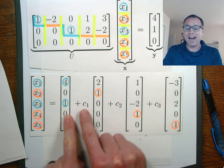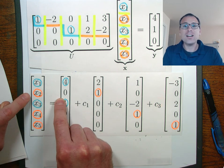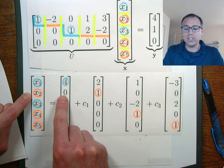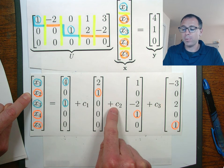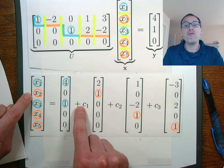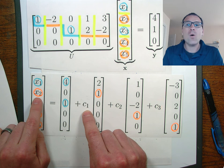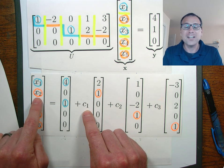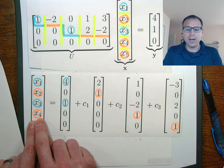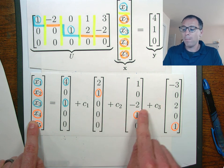And then we have these extra pieces of information that have no constraints. If we take a look at row two of this equation, we see that x2 is going to be equal to zero plus c1 plus zero plus zero. In other words, we are free to choose x2 - that is a free variable. Same thing over here: the fourth row of this equation, x4 is zero plus zero plus c2 plus zero.